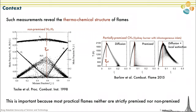The data is typically plotted as scatter plots. For example, here you'll find scatter plots from the literature: one showing major species mole fractions as a function of mixture fraction, and one showing temperature as a function of mixture fraction. Someone with experience can instantly recognize the kind of flame — here a diffusion hydrogen flame, and here the Sydney burner with mixed modes of combustion, showing sometimes diffusion mode, premixed mode, or diffusion mode with evidence of local extinction. This is important because most practical flames are neither strictly premixed nor non-premixed.